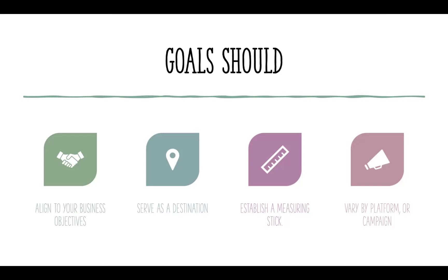Your goals should really align with your business objectives and serve as a destination — meaning that this strategy gets you from point A to point B in sales and marketing. It should establish a measuring stick, meaning you should be able to measure engagement and return on investment. When planning your strategy, it should also vary by platform or by campaign — what you put on TikTok is not what you put on Instagram, Facebook, or X.